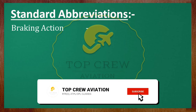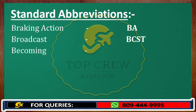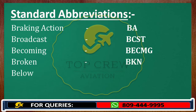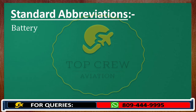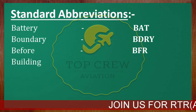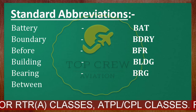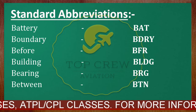Braking Action — BA. Broadcast — BCST. Becoming — BECMG. Broken — BKN. Below — BLW. Break — BRK. Battery — BAT. Boundary — BDRY. Before — BFR. Building — BLDG. Bearing — BRG. Between — BTN.